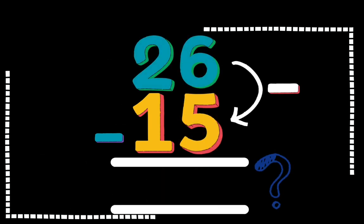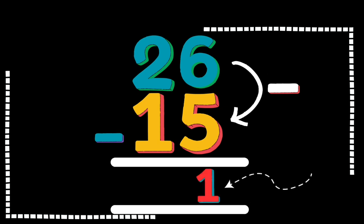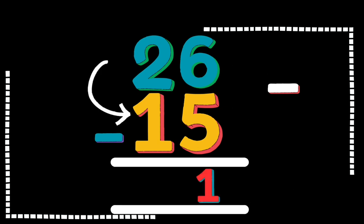26 minus 15 is equal to what? 6 minus 5 is equal to 1. 2 minus 1 is equal to 1. So the answer is 11 by subtracting 26 and 15.